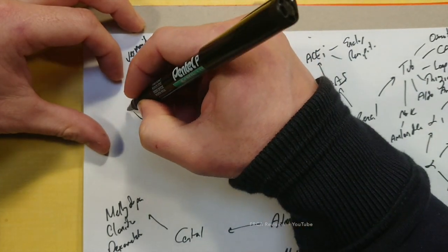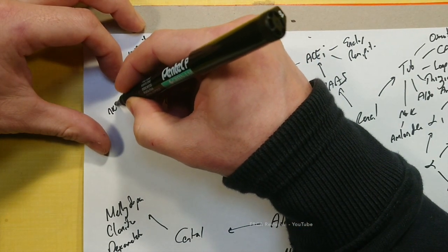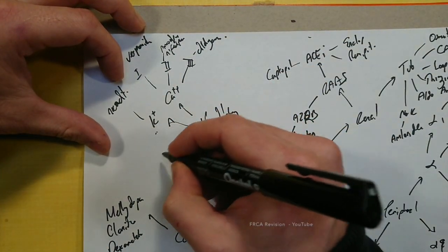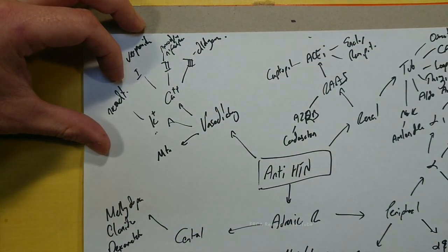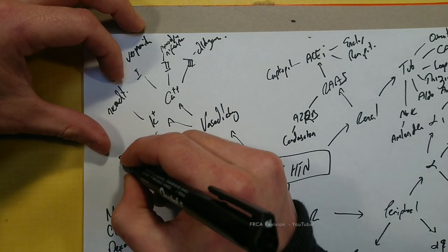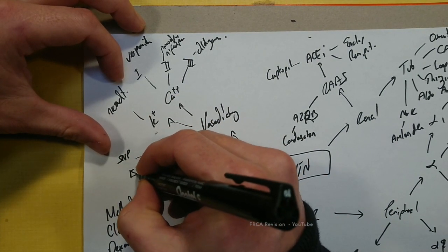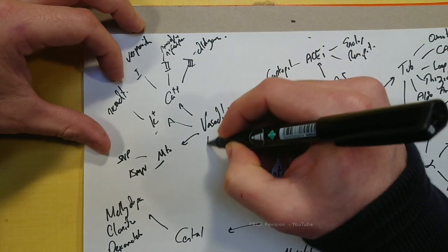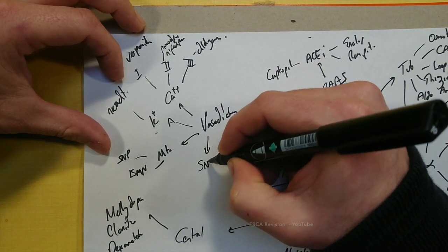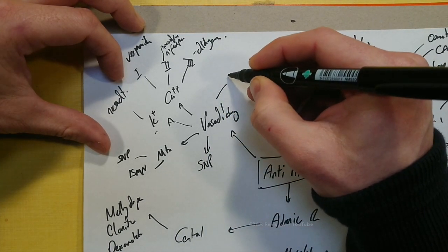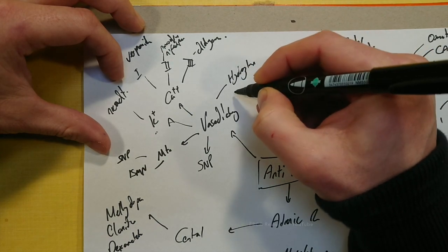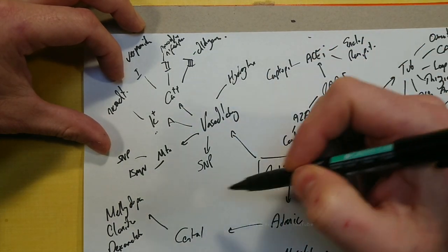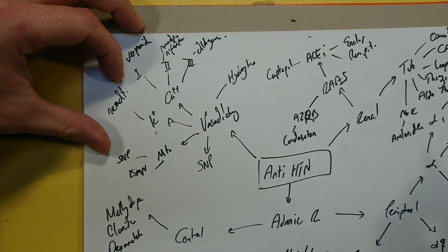There is also the potassium channel, which is nicorandil. And then things that affect the nitrates, which include things like sodium nitroprusside, as well as isosorbide mononitrate. And then we have hydralazine, which is more associated with smooth muscle and nitric oxide.